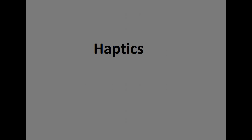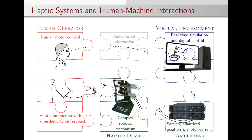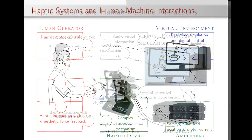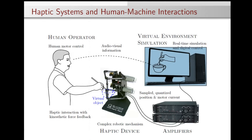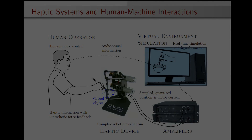Haptics is a technology concerned with relaying forces from a virtual or tele-operated world to a human user by way of a device. The building blocks of all haptic systems can be partitioned into three components: the human user, the haptic device, and the environmental display.